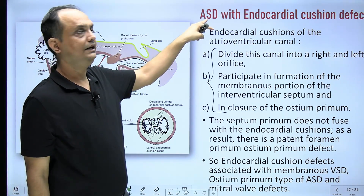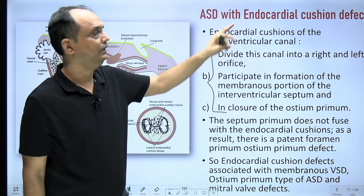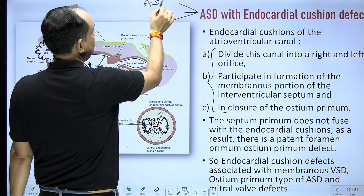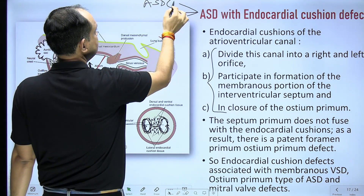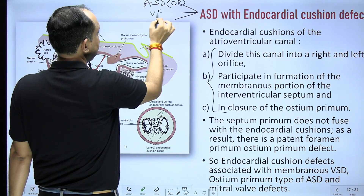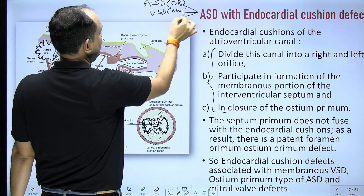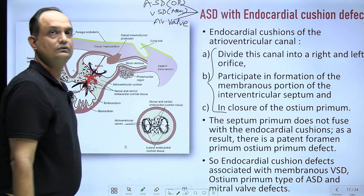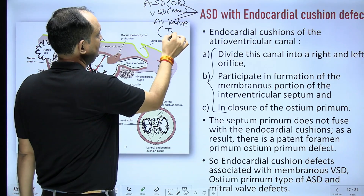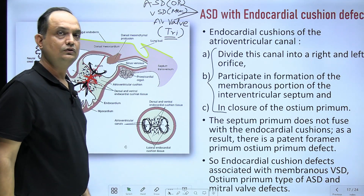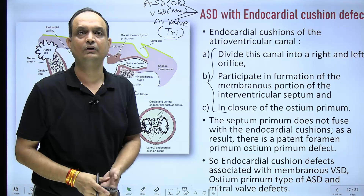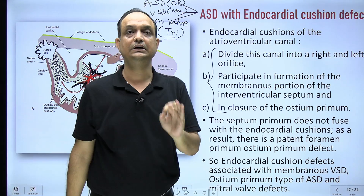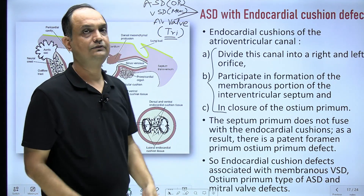In atrial septal defect with endocardial cushion defect, it is a triad. You will have ASD with persistence of ostium primum, you will have VSD of membranous type, and you will have AV valve defect — meaning the canal defect, with particular involvement of the tricuspid valve. This is a common exam question: when talking about endocardial cushion defect with atrial septal defects, these are the three components.